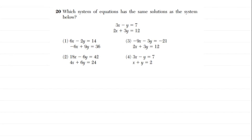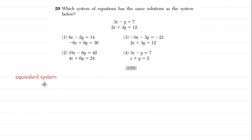Number 20 covers our favorite topic: systems of linear equations. When they ask which system has the same solutions as the given system, that's the same as asking which is an equivalent system. Remember: if you do the same thing to both sides of an equation — add the same thing or multiply both sides by the same thing — you don't actually change the overall solution.